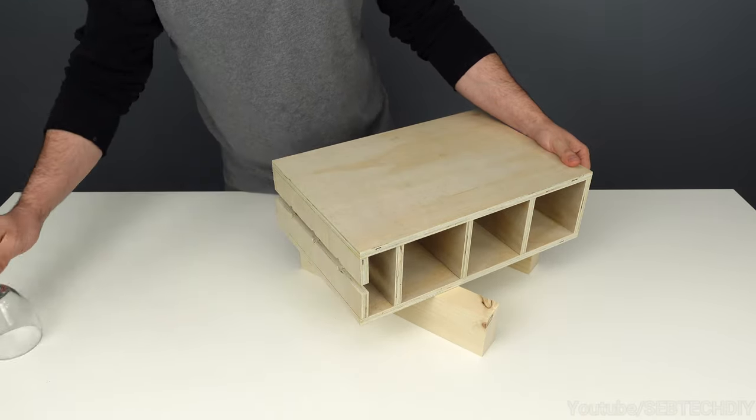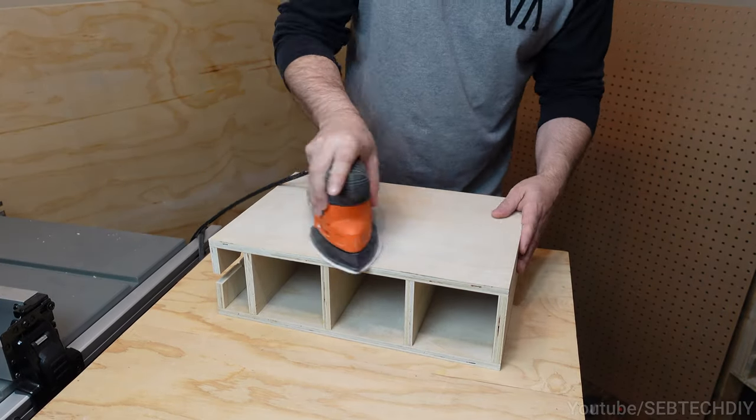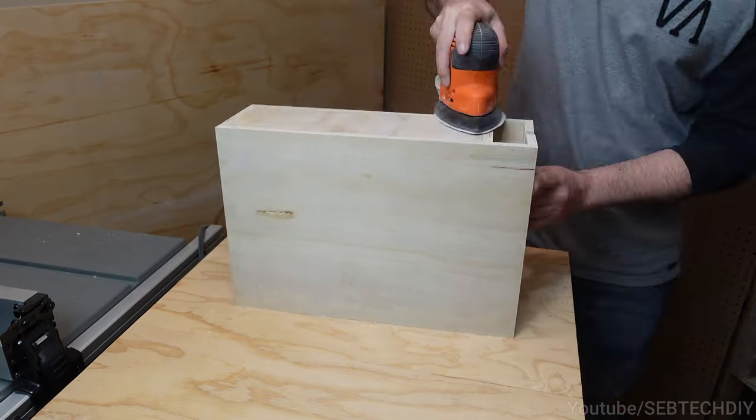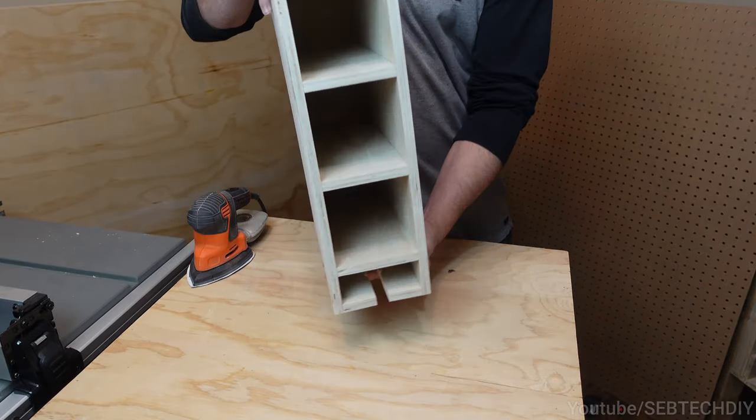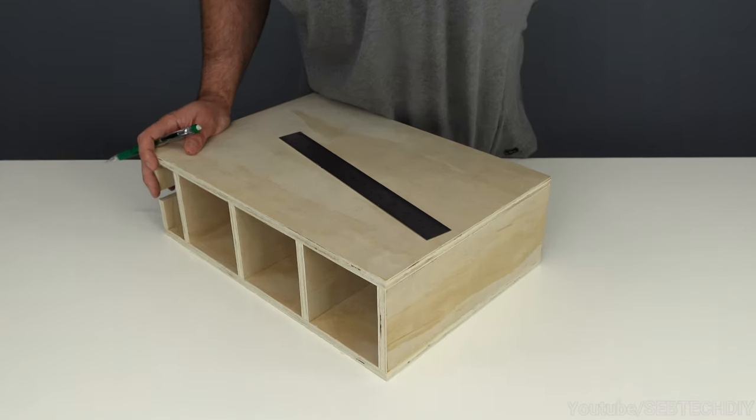So we can move on to the sanding. Using my mouse palm sander and some 120 grit sandpaper, I sand until everything is smooth. Alright, next we need to find a way to hang it on the wall.